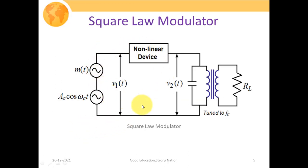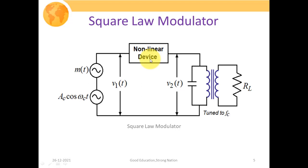This particular figure is showing your square law modulator. Here we have two input signals. One is your carrier signal, denoted by AC cos of omega-C times T, where omega-C is the angular carrier frequency whose linear carrier frequency is FC — so omega-C equals 2 pi FC. M(T) is your message signal, or the signal that you want to modulate. The combination of both the carrier signal and the message signal is applied to your nonlinear device, which is your diode circuitry or transistor.